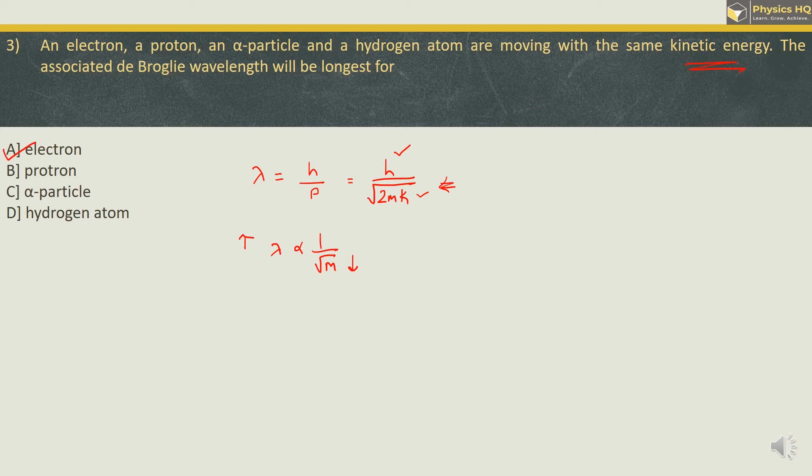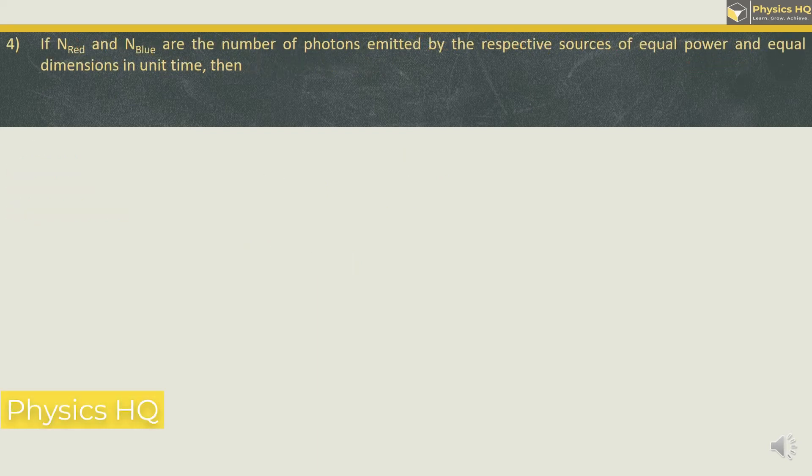Let us check out the next MCQ. If n_red and n_blue are the number of photons emitted by the respective sources of equal power and equal dimensions in unit time, then which relation given is correct. Now to understand this, let us talk about the power and time which is given. We know that product of power and time is nothing but energy.